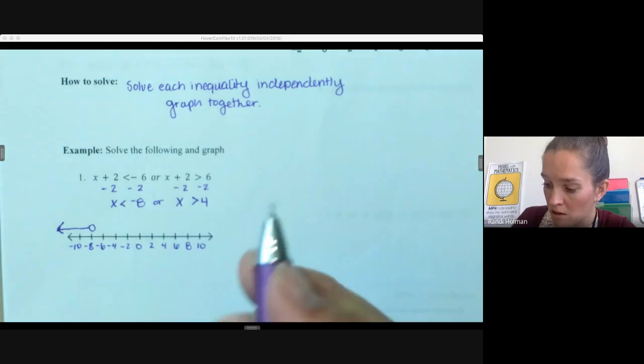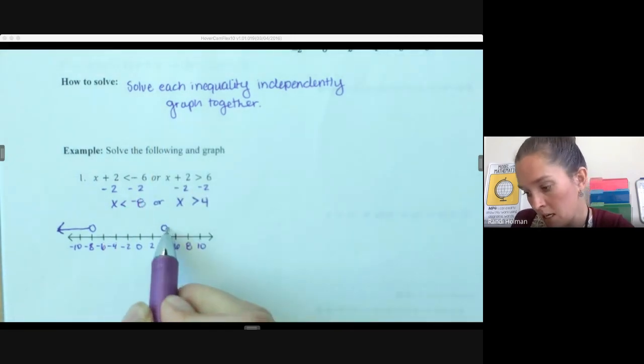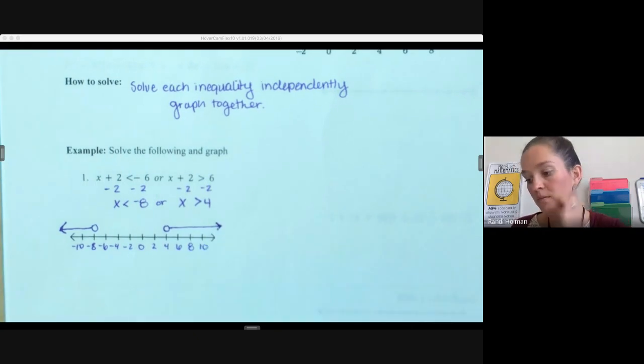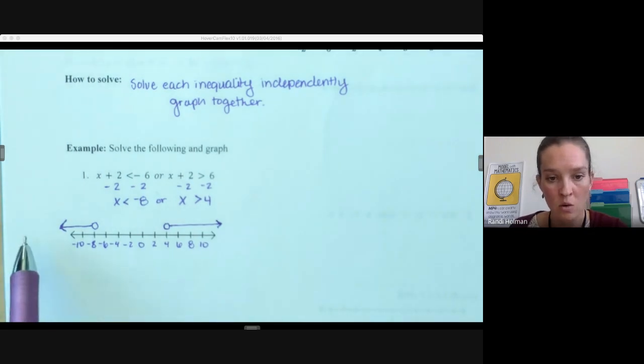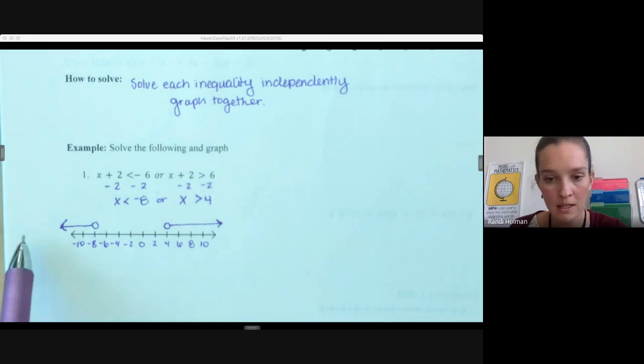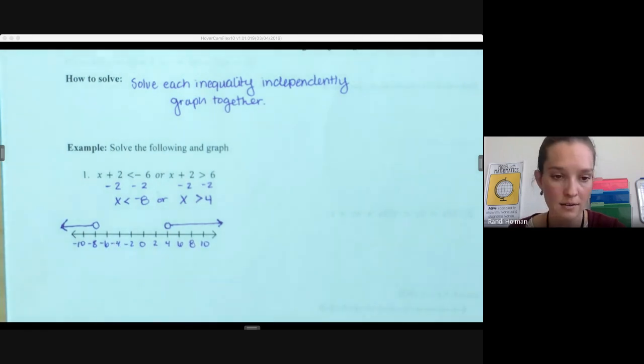Or x is greater than 4. So again, we're not equal to 4, but we're anything larger than 4. So the solution to this compound inequality could be 10 or negative 15 or 347 or negative 1 million. But not 2, negative 2, or 0, or 4, or negative 5. Those would not be solutions to our inequality.